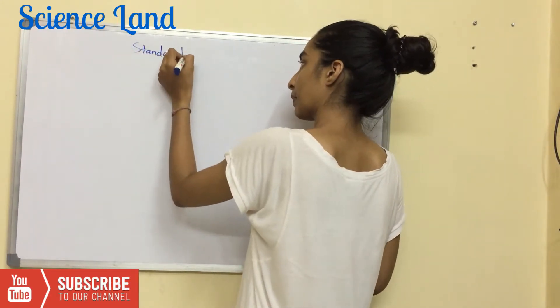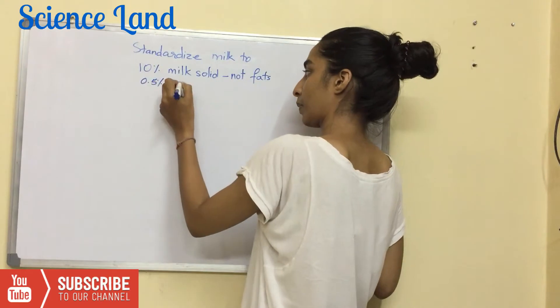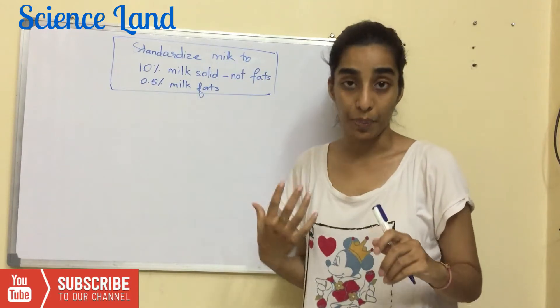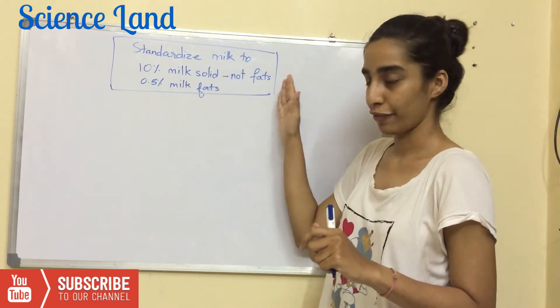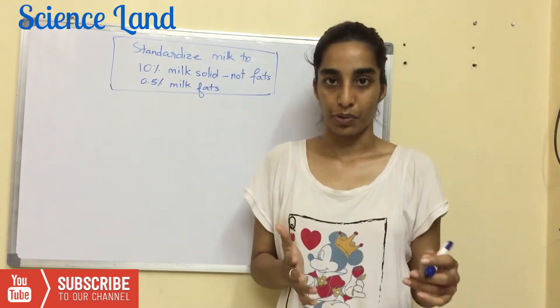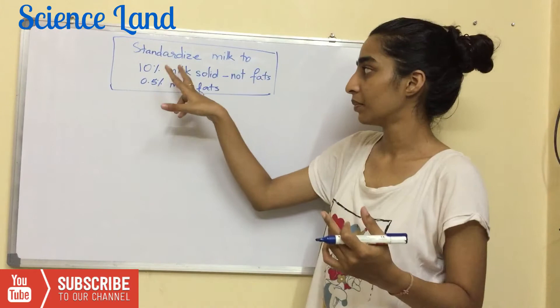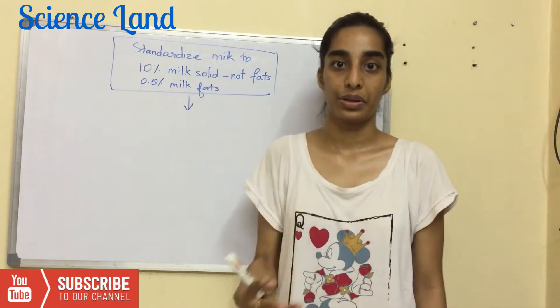We'll start with the manufacture of cultured buttermilk in the form of a flow sheet. The first step is to standardize the milk — 10 percent milk solids-not-fat. Milk solids-not-fat means apart from fat, components like lactose, casein, minerals, and whey proteins. The milk fat is standardized to 0.5 percent. After standardization, heat treatment is given.